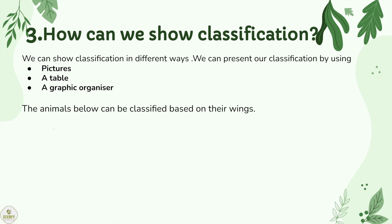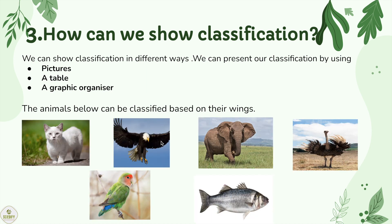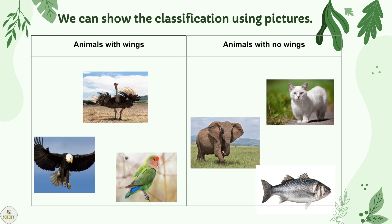How can we show classification? We can show classification in different ways. We can present our classification by using pictures, a table, or a graphic organizer. The animals below can be classified based on their wings. We can show classification using pictures: animals with wings, and animals with no wings.